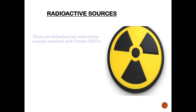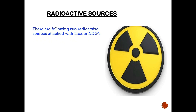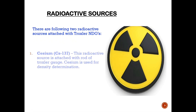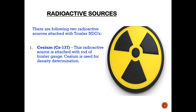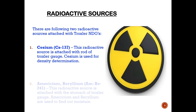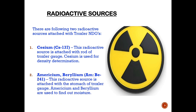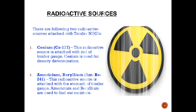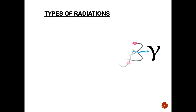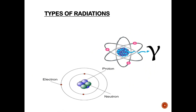There are two radioactive sources attached with the Troxler nuclear density gauge. Cesium, which is attached with the rod of the Troxler gauge and is used to find out density. Americium-Beryllium, which is present in the body of the Troxler gauge and is used to find out moisture.